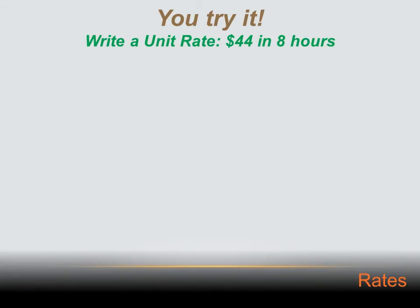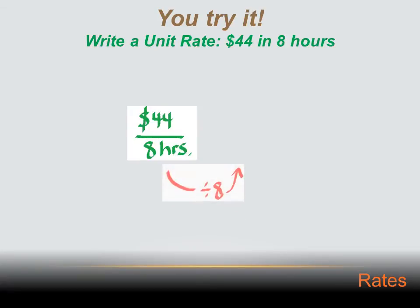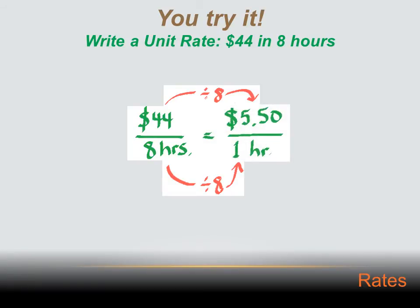What is the unit rate equivalent to $44 in 8 hours? First, write it as a rate: $44 over 8 hours. To convert to a unit rate, you need to change 8 hours to 1 hour, so divide by 8. Divide the bottom by 8 and the top by 8 as well. That gives you $5.50 per one hour.